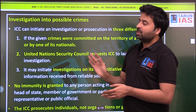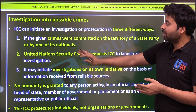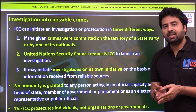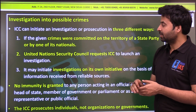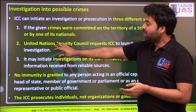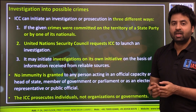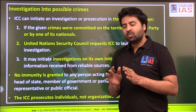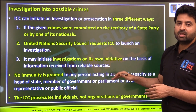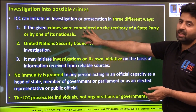The ICC can start investigations into the four listed crimes in three ways. First, if the crime happens in a country that is a member of the ICC, that country can bring a complaint. Second, if the United Nations Security Council — not the General Assembly — requests the ICC to launch an investigation. Third, like India's Supreme Court taking suo motu notice, the ICC can also initiate investigations on its own initiative.